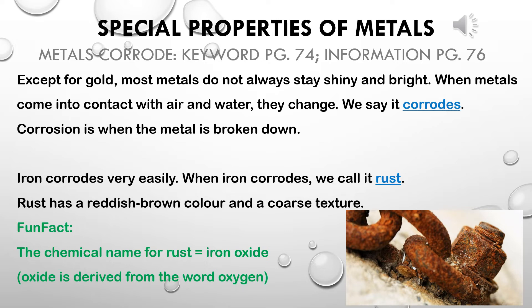If you've ever left a metal outside and seen it turn a reddish-brown color that becomes rough in texture, that is iron that has rusted. A fun fact: the chemical name for rust is iron oxide. 'Oxide' is derived from the word oxygen, so oxygen in the air comes into contact with iron and leads to rust.